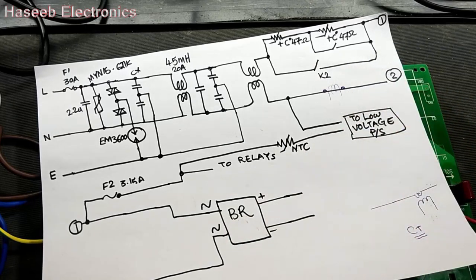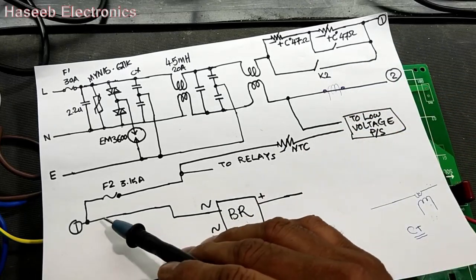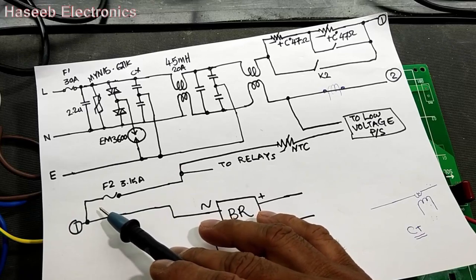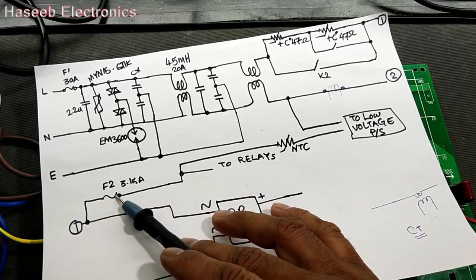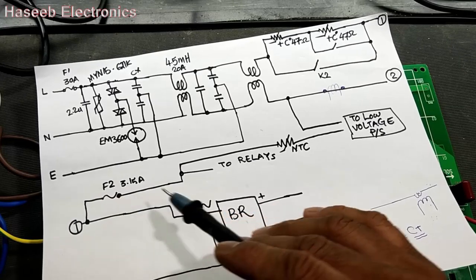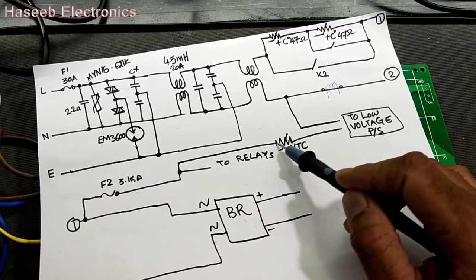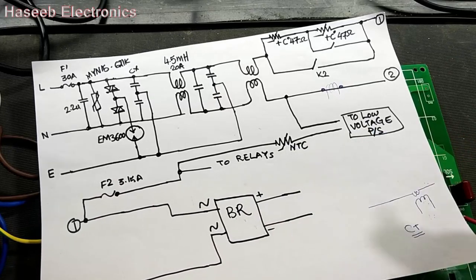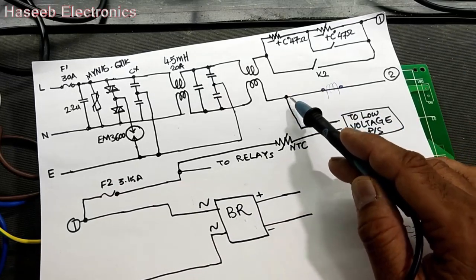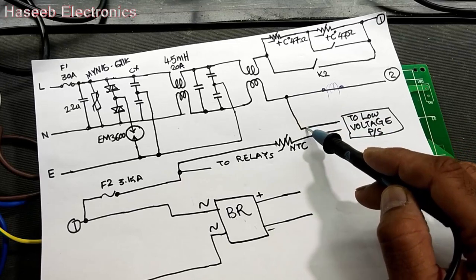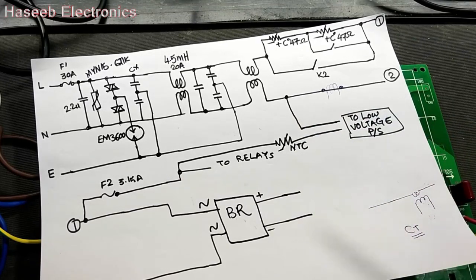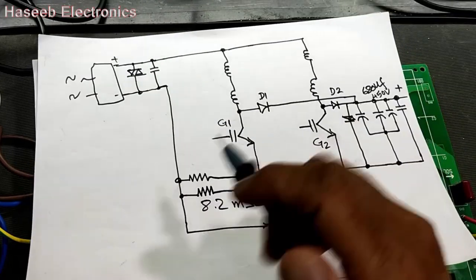We discussed those topics in our first video. Then we have a fuse, NTC, and this line will go to the low voltage power supply. From the neutral line we take a line direct to the low voltage power supply section.